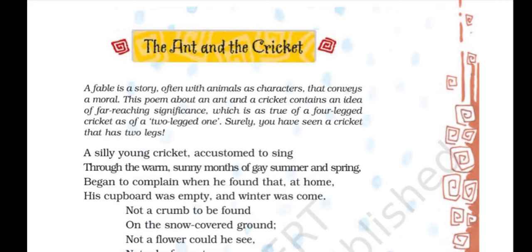Now, we all know that crickets have four legs, but over here the cricket has two legs — this cricket is two-legged. What is the poem trying to say when it says the cricket has two legs? I think it is a metaphor for humans, because humans have two legs. So, wherever this poem is trying to foreshadow something, it is foreshadowing what few human beings do. When it says 'two-legged cricket,' that means human beings — it is symbolized as, used as a metaphor for human beings.